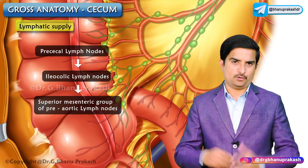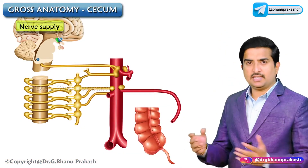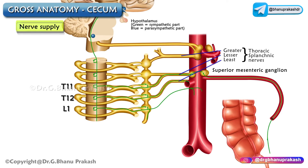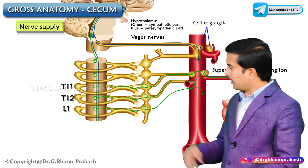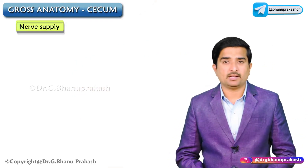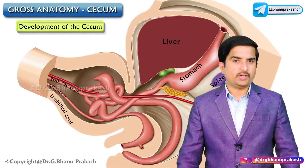The sympathetic nerve supply of the cecum is from T11 and L1 spinal segments via the superior mesenteric plexus. The parasympathetic nerve supply is from both vagus nerves. This completes the neurovascular structures of the cecum.